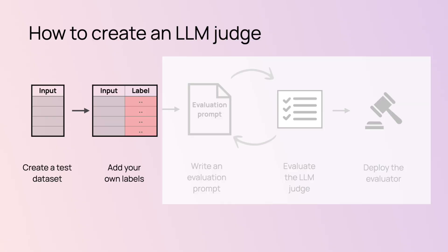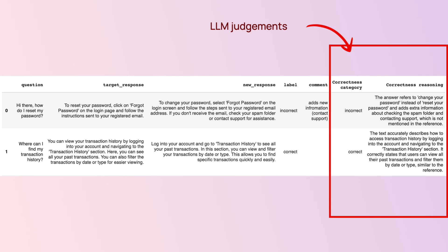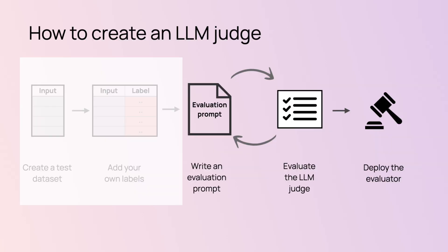So how do you create an LLM judge? First, you start by being the judge yourself and doing some manual labeling. For example, you may want to rate the correctness of a new response compared to a reference answer. As you start labeling the data yourself, you'll notice nuances — like how big a difference counts, do you look at every detail or just the overall idea, and what if the LLM adds an extra greeting? Does this make the answer incorrect or not? After you do this exercise manually, you can write the evaluation prompt, run it, and see how well the judge aligns with your labels.